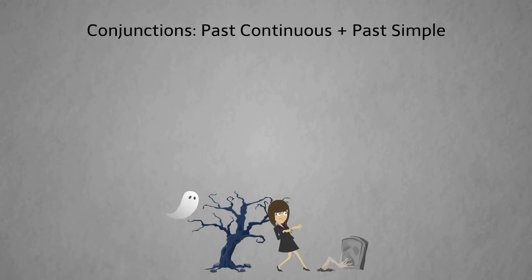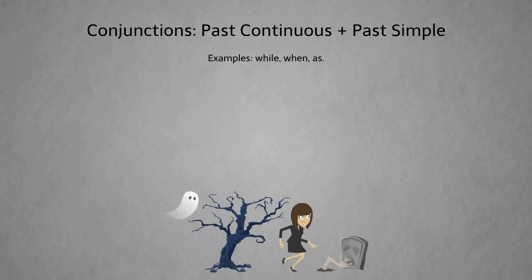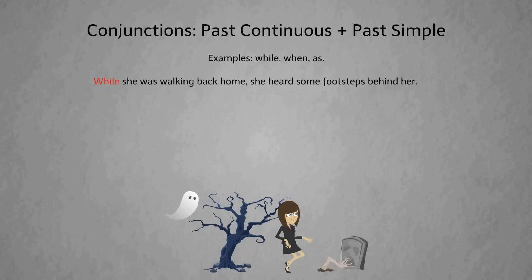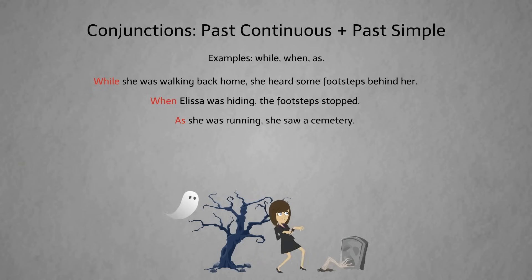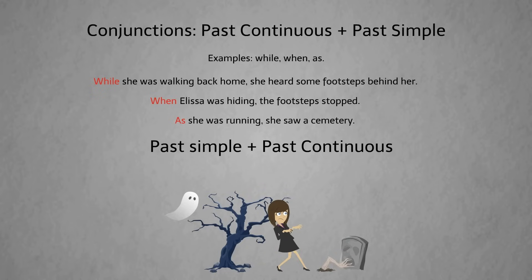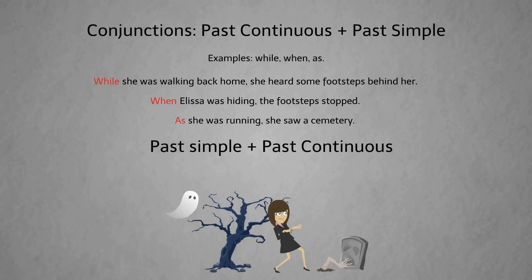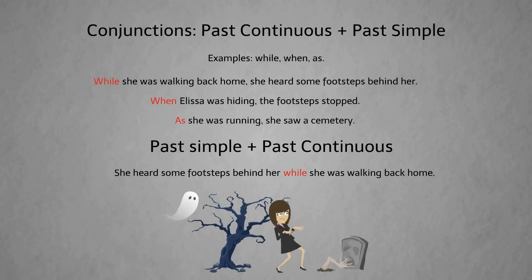To join past continuous and past simple actions, we use conjunctions such as while, when, and as. For example: 'While she was walking home, she heard some footsteps behind her.' 'When Alyssa was hiding, the footsteps stopped.' 'As she was running, she saw a cemetery.' We can also switch the order by placing the past simple at the front: 'She heard some footsteps behind her while she was walking back home.'